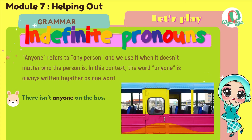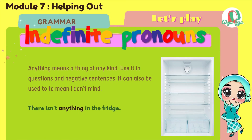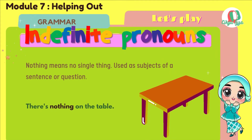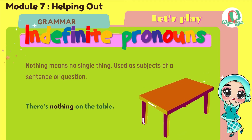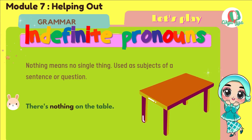Anything means a thing of any kind. Use it in questions and negative sentences. It can also be used to mean 'I don't mind'. For example: There isn't anything in the fridge. Nothing means no single thing. It can also be used as the subject of a sentence or questions. For example: There's nothing on the table — tiada apa-apa di atas meja.